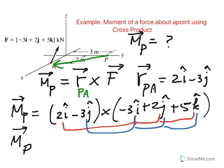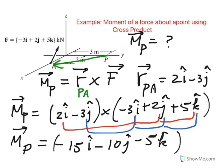So this moment about P, which is a cross product of R and F, happens to be minus 15I after you do the simplification, minus 10J, and minus 5K. The unit is kilonewton meters.